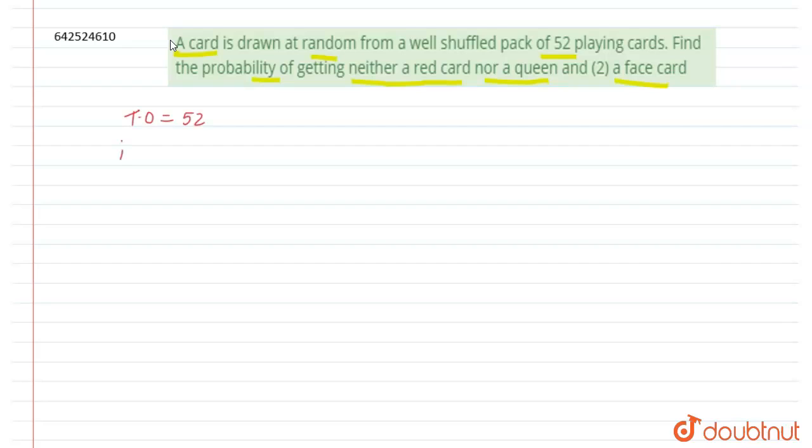Now taking up the first part, find the probability of getting neither a red card nor a queen. What we have to find is cards other than these two categories. That means a random card is drawn which should not be a red card and also not be a queen.